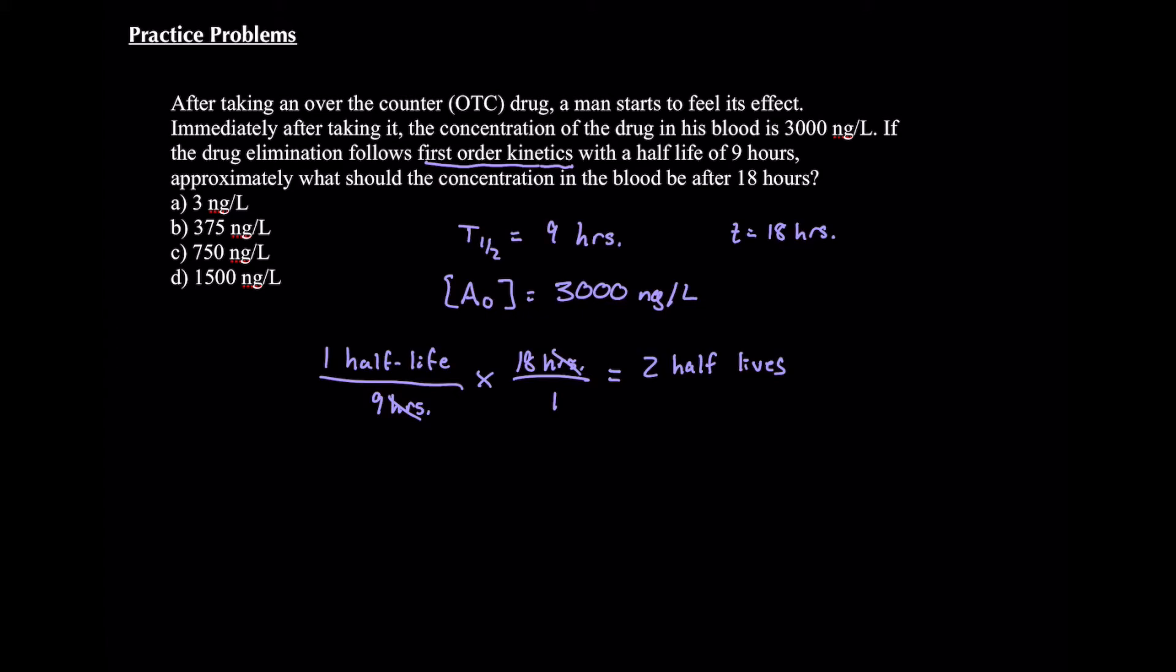And if we know we have to half our original concentration every half-life, that means we have to half 3000 nanograms per liter twice. So what we'll end up doing is, number one, so this is our first half, 3000 divided by 2, and that's going to be 1500. And our second half, we can do 1500 divided by 2, and that should be 750. And those are things you should probably be able to do in your head.